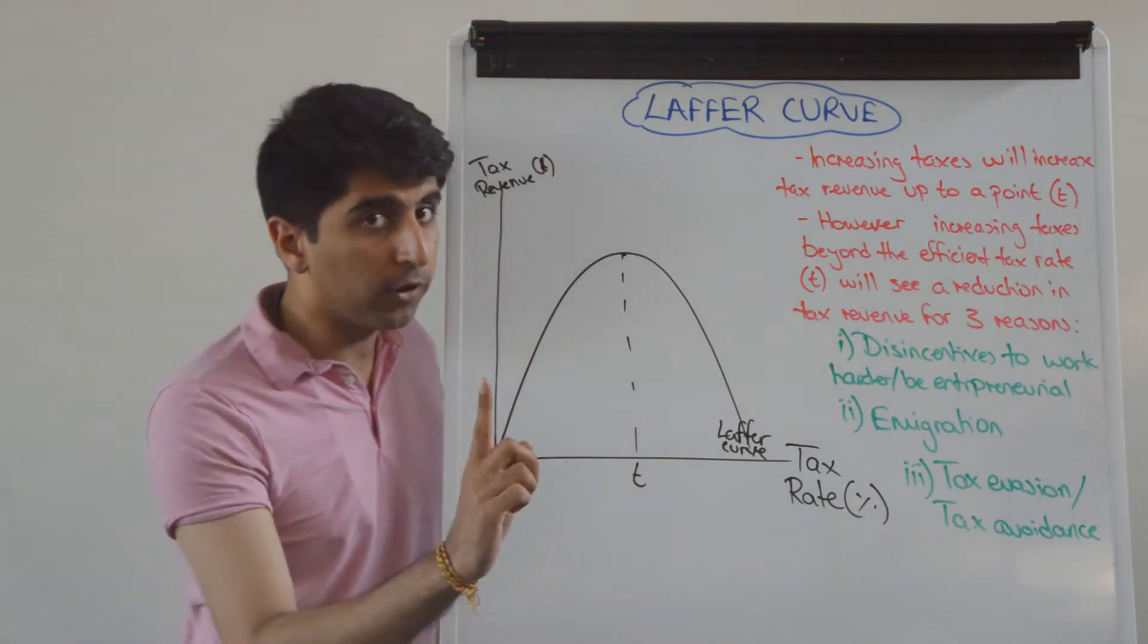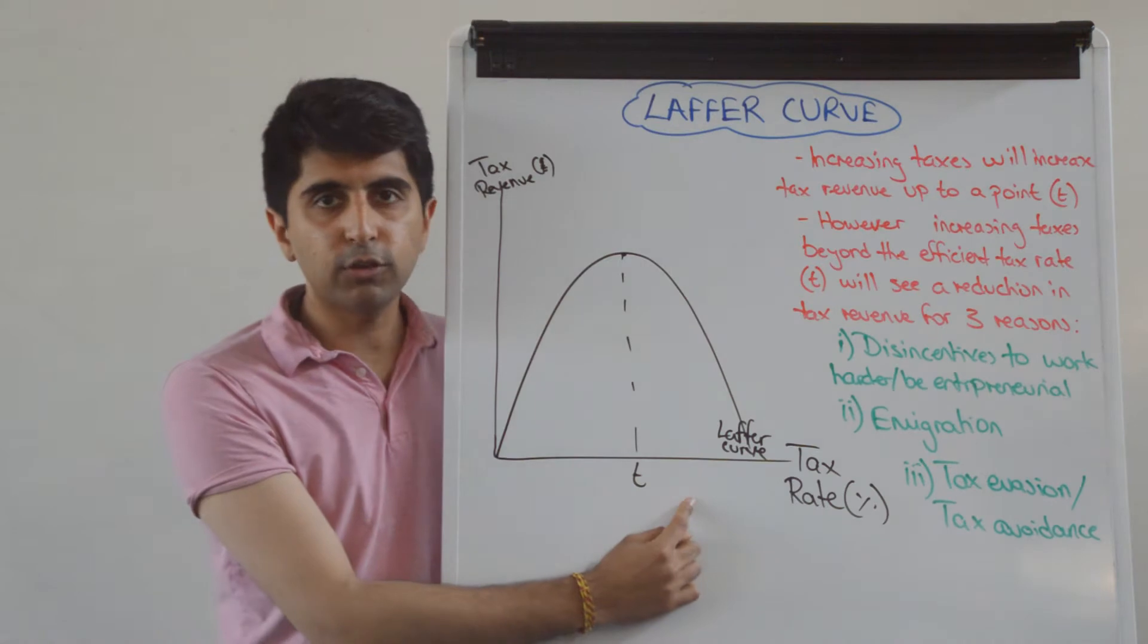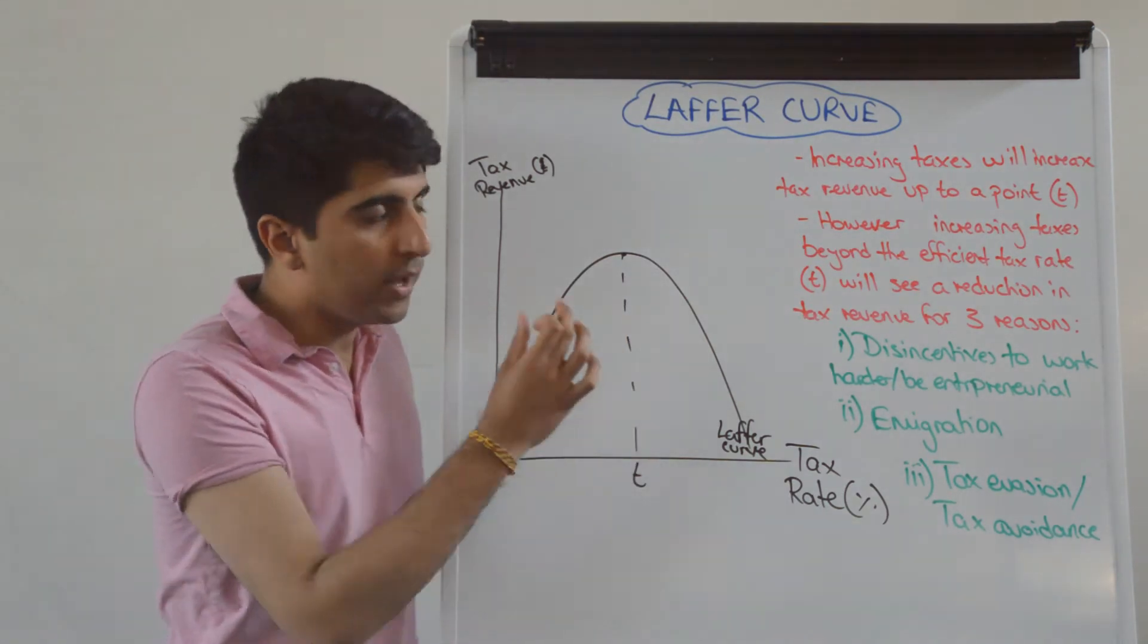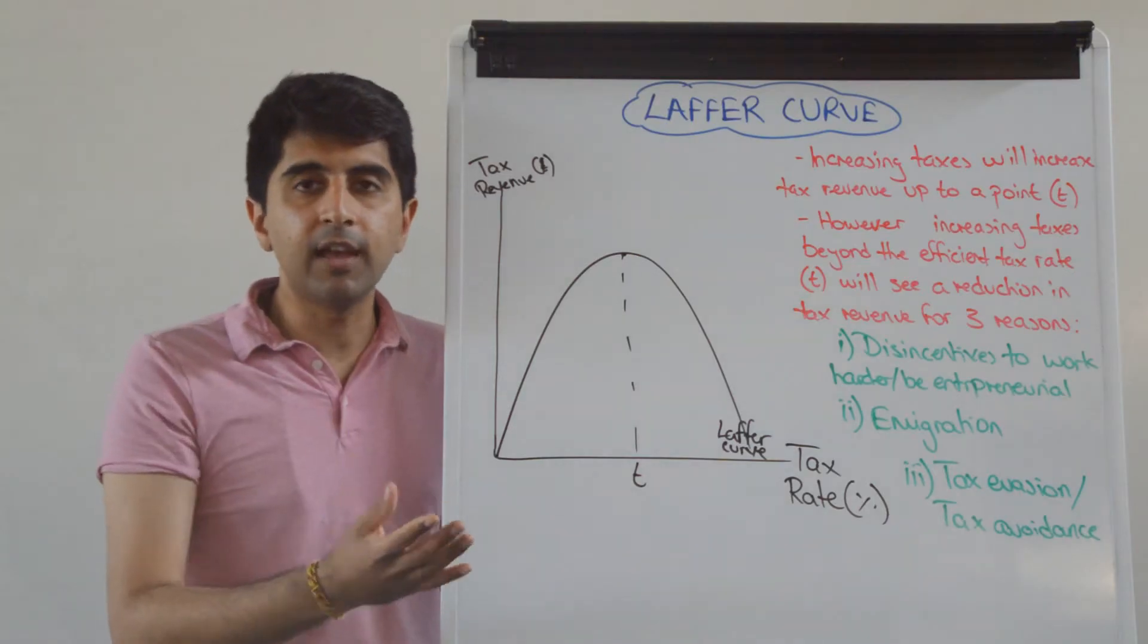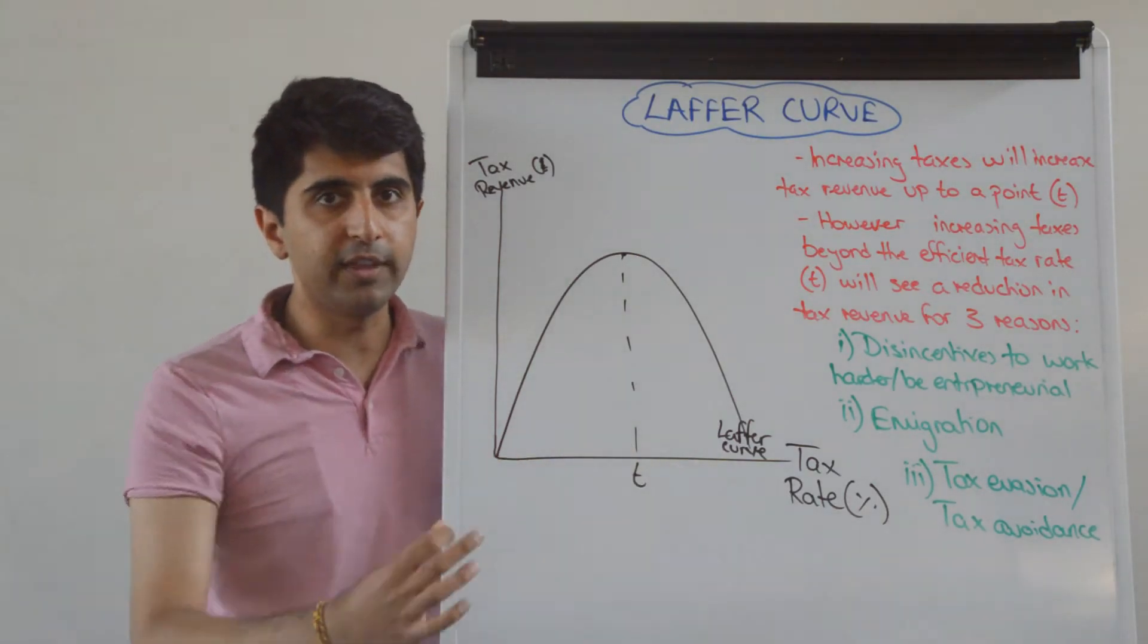But Laffer says, hang on, only up until a point, only up until T. Beyond a tax rate of T, if the government increases taxes, tax revenue is actually going to decrease. And he argues that it's going to decrease for three reasons beyond the efficient tax rate.